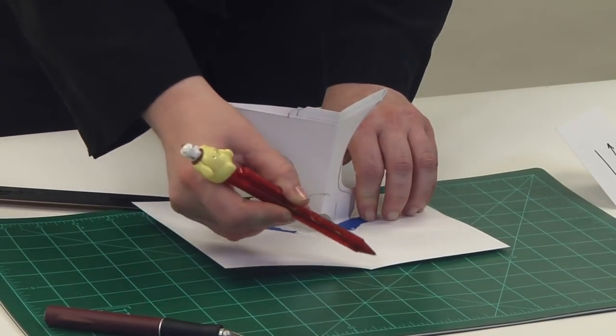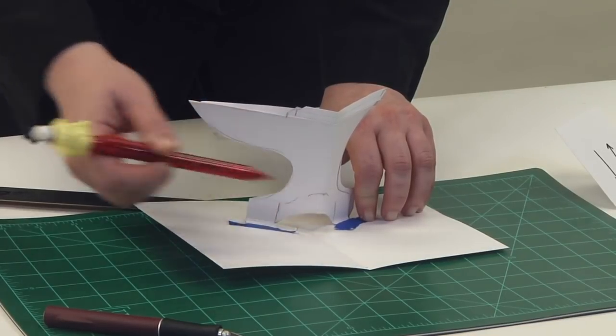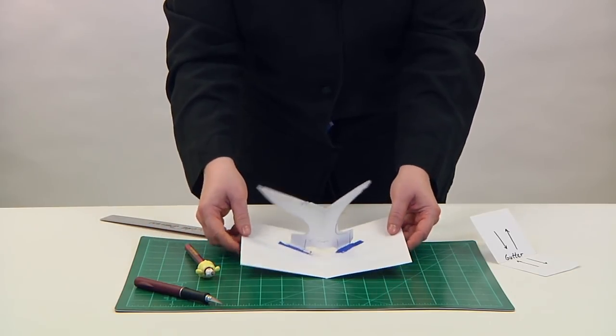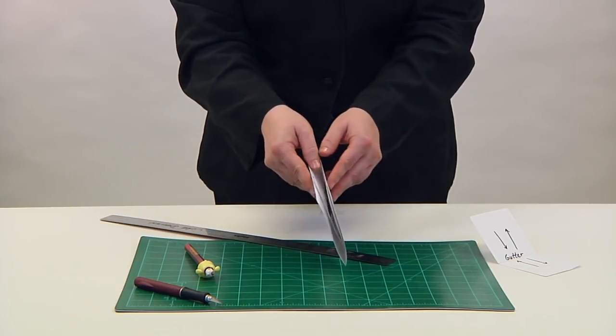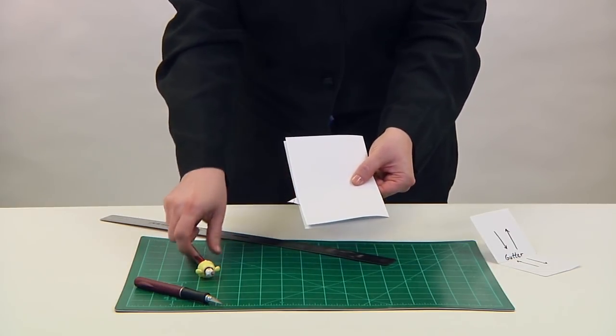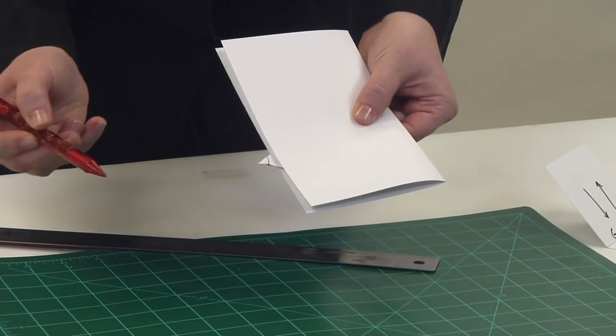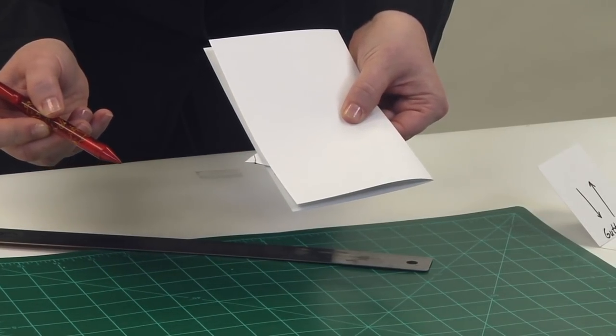In basic mechanisms, the fold, whether it be a mountain or valley, needs to align with the gutter in order for the spread to close properly. Designing the piece so that the interior does not show when closed is a sign of good craftsmanship. This one will need to be resized.